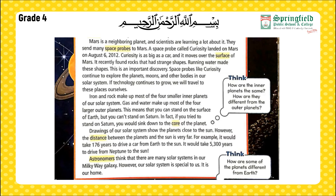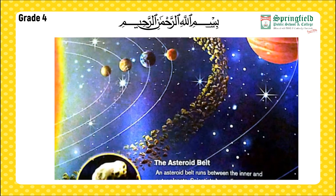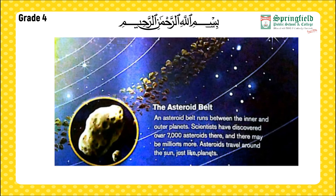Astronomers think that there are many solar systems in our Milky Way galaxy; however, our solar system is special to us — it is our home. The asteroid belt runs between the inner and outer planets. Scientists have discovered over 7,000 asteroids there, and there may be millions more.